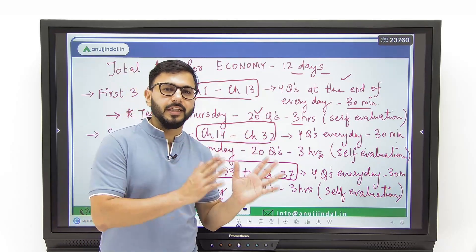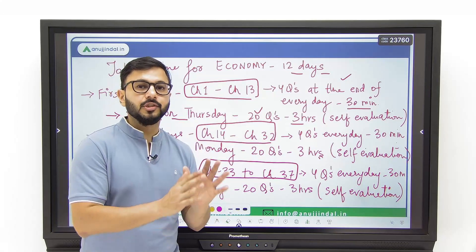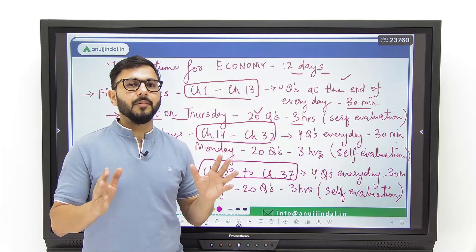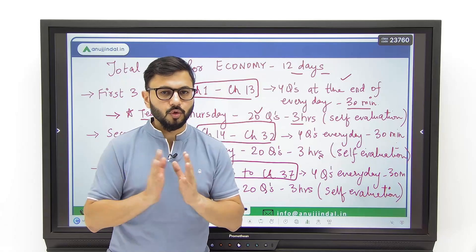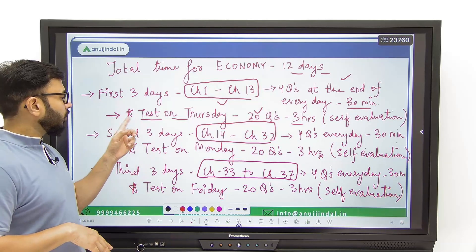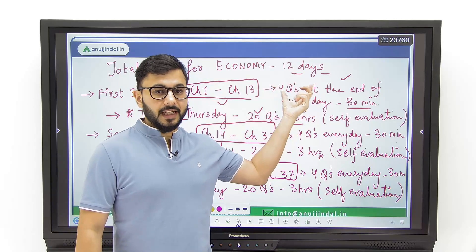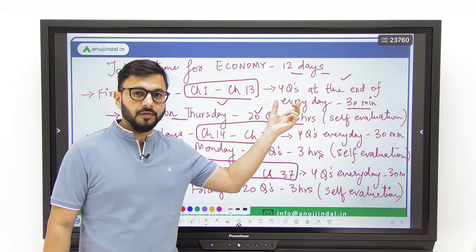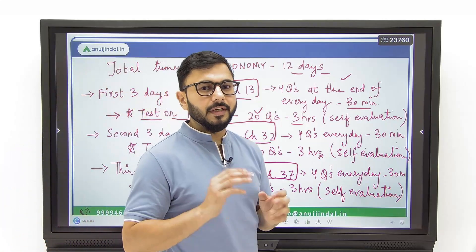It doesn't matter if you're writing only economy questions or only history or only ethics questions, as long as you're writing 20 questions at least to start with. On the fourth day you write one test — 20 questions, 3 hours — and then you spend the remaining part of the day evaluating the entire paper by yourself. How to do self-evaluation, I will be talking about that. These four questions you write at the end of every day will prepare you for this final test on Thursday. If you don't write them every day, automatically you will not be able to write this test.